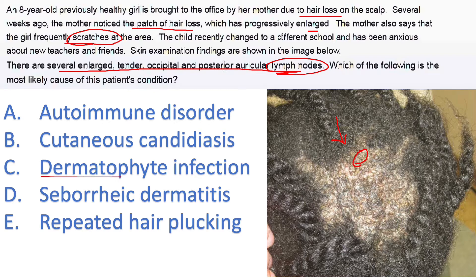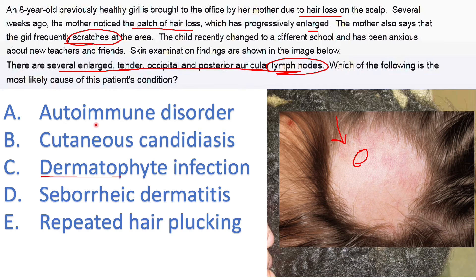The correct answer is dermatophyte infection, but let's understand why the other answers are wrong. An autoimmune disorder here refers to alopecia areata, which shows a completely clear, smooth area of hair loss — nothing else is wrong with the scalp. That's not the case here. Plus, with an autoimmune disorder you wouldn't see scratching, scales, or enlarged lymph nodes. Enlarged lymph nodes indicate there's an organism involved.